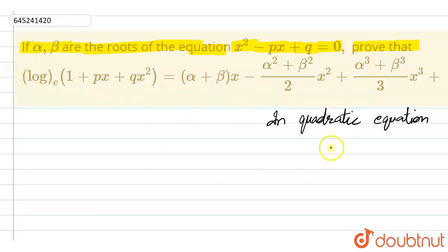Quadratic equation is of the form ax squared plus bx plus c equal to 0. So if roots are alpha, beta, then sum of roots is equal to minus b by a.